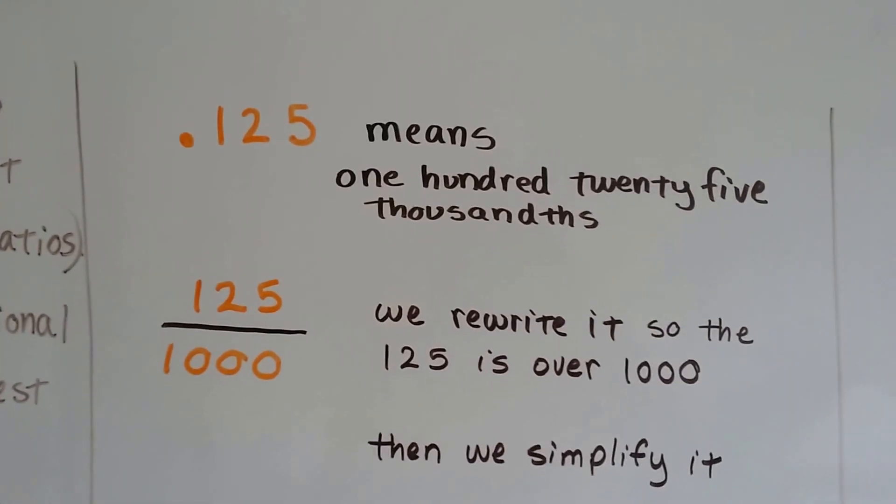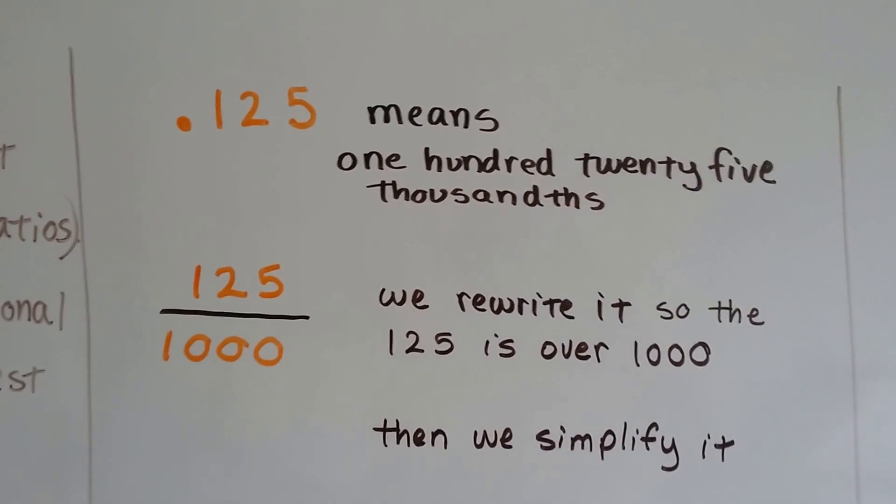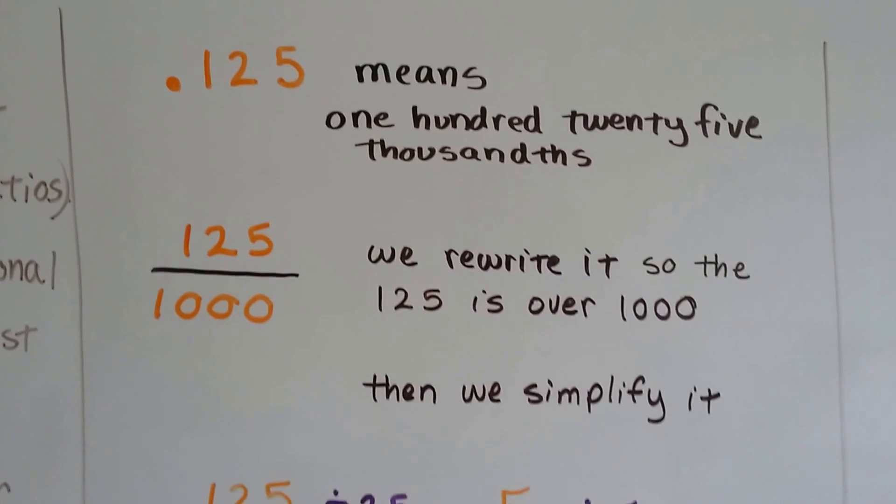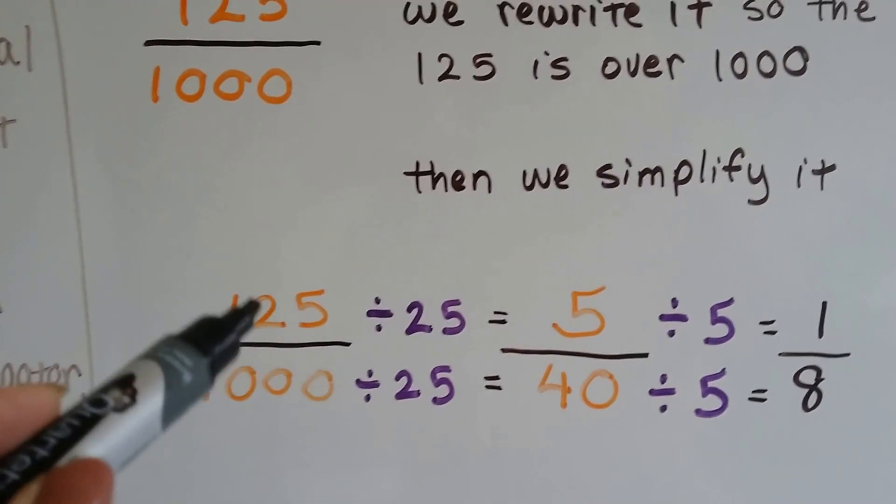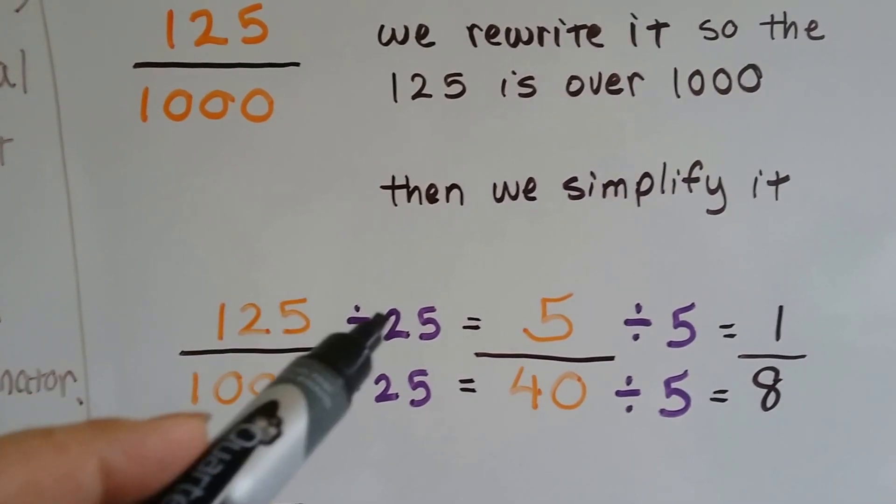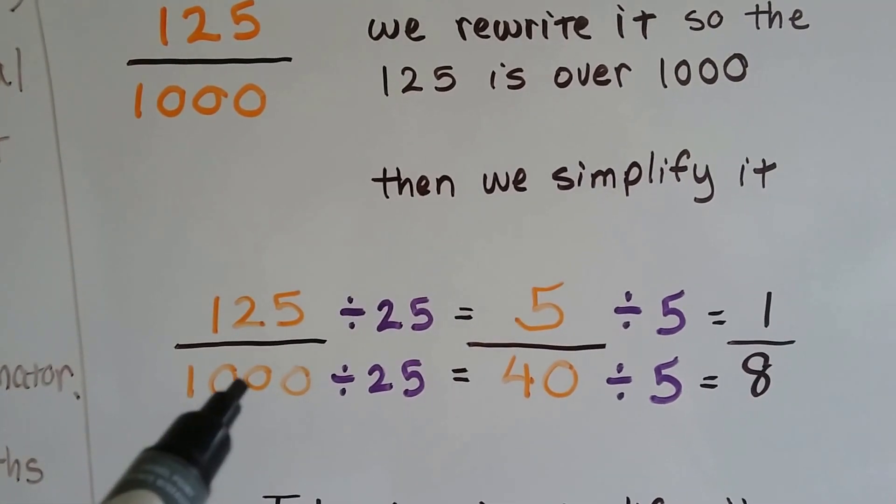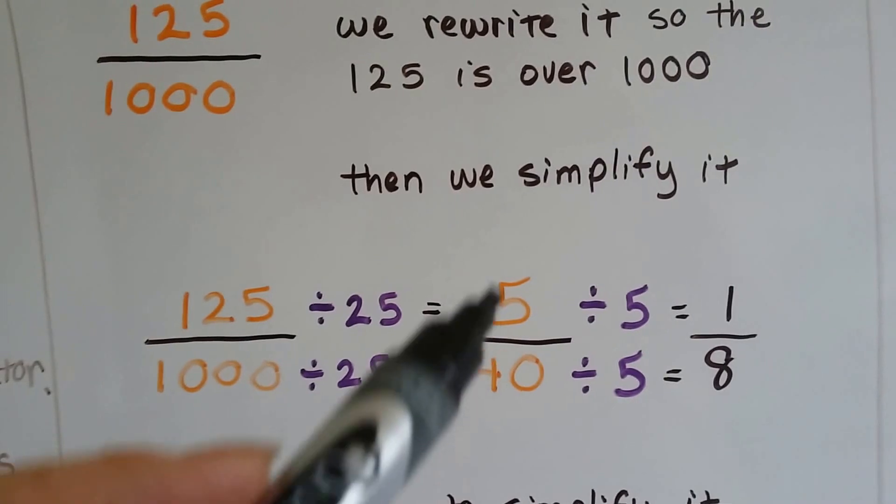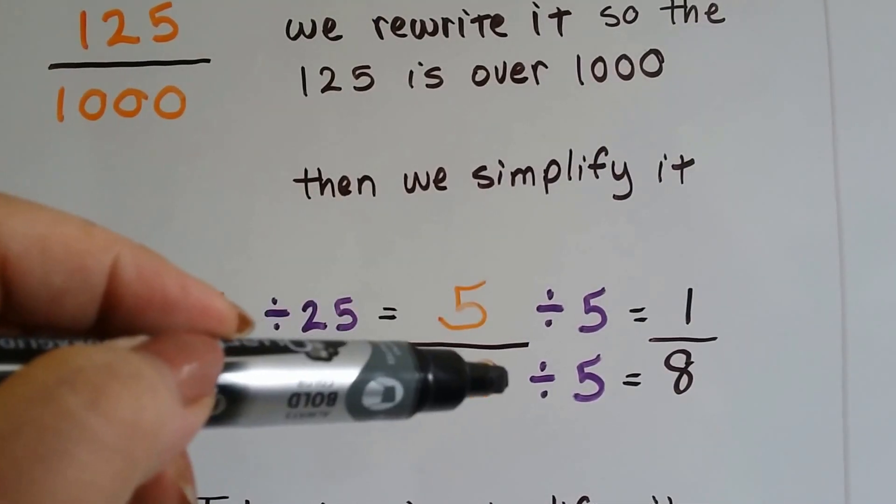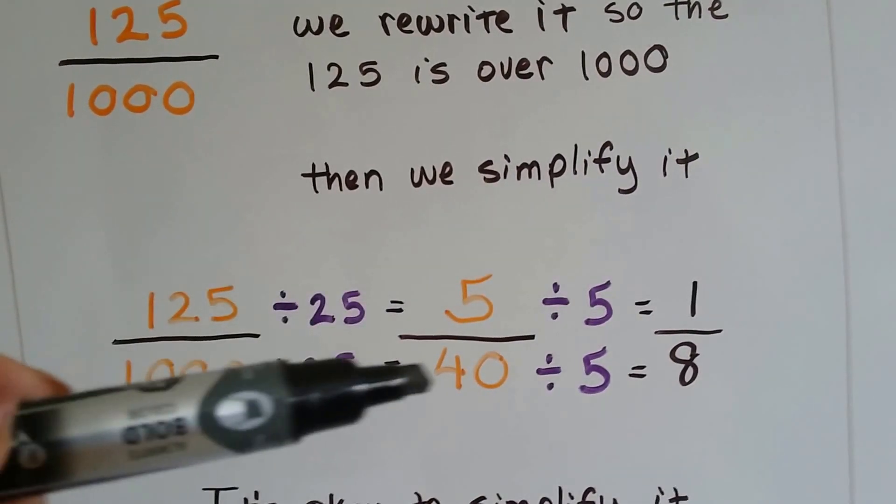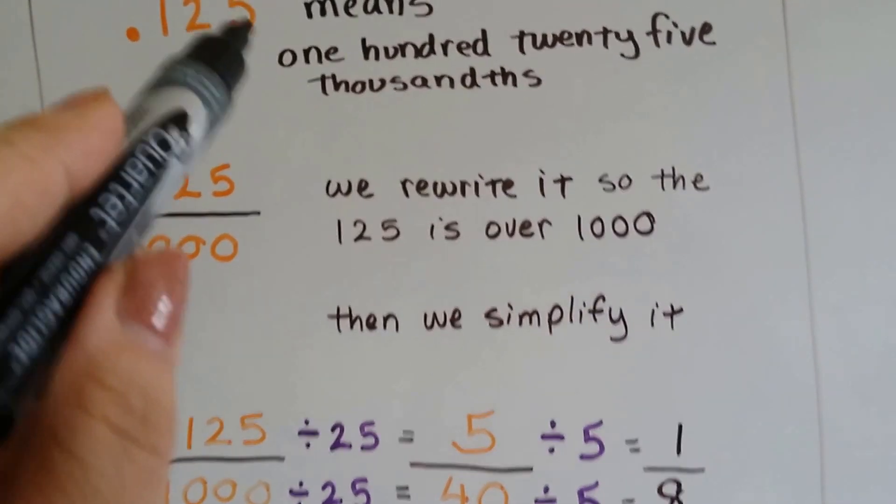So if we have 0.125, it means one hundred twenty-five thousandths. We rewrite it so the 125 is over the 1,000, and then we simplify it. I figured 25 could go into both of them. So I divided the 125 by 25 and got 5. I divided the 1,000 by 25 and got 40. And I saw that 5 can go into 40 evenly. So I divided both the numerator and denominator by 5. 5 divided by 5 is 1, 40 divided by 5 is 8. I got 1 eighth. 0.125 is 1 eighth.